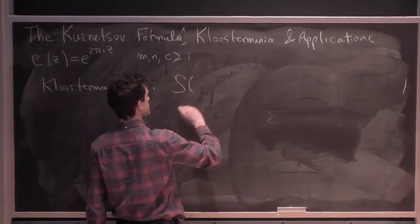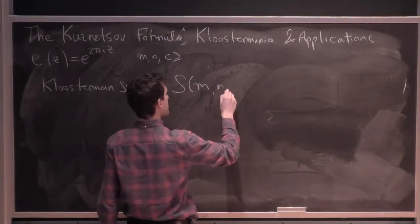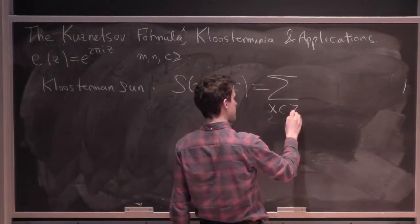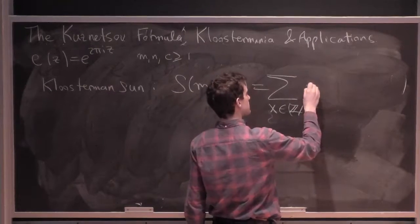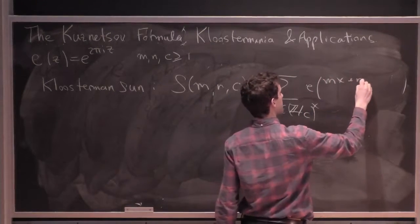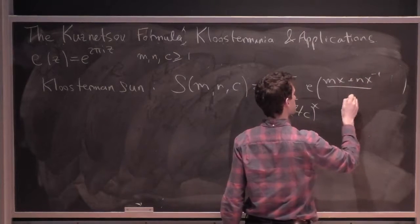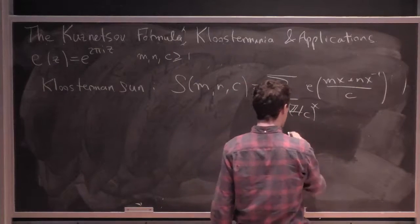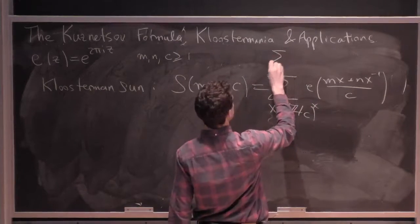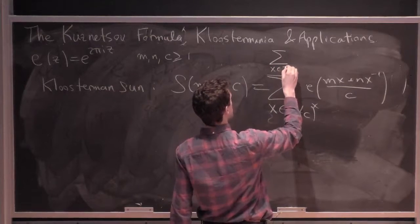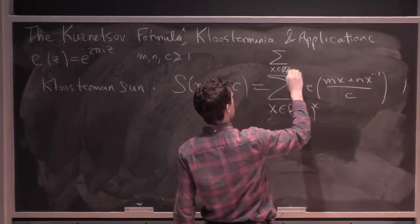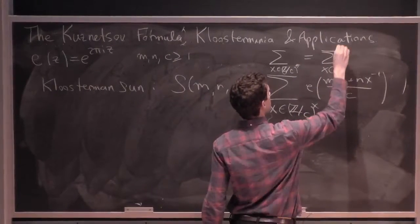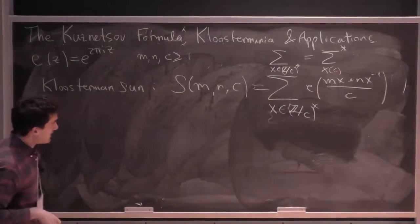The classical notation is S(M, N, C): it's a sum over X running through Z mod C invertible, of e((MX + NX-inverse)/C). Often I'll write the sum over invertible elements with a little star above the sum.